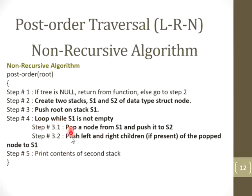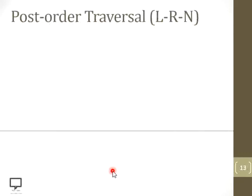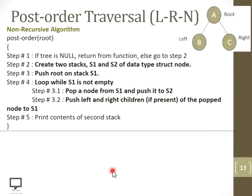Continue this until S1 is empty, then go to step 5 and print all the contents of S2. The reason we push left child before right child will be explained during the dry run. Let's move to the next slide where this algorithm is shown for reference, along with the example tree we will dry run.